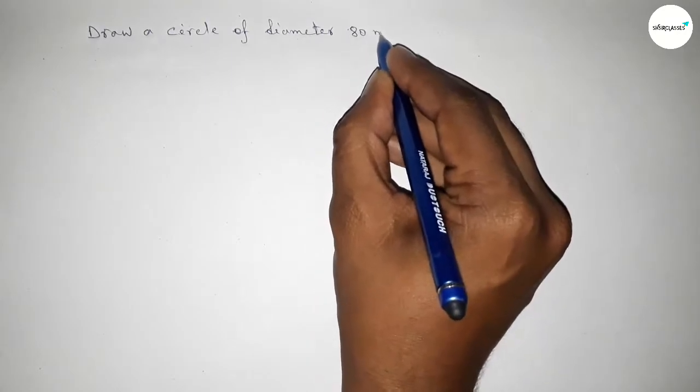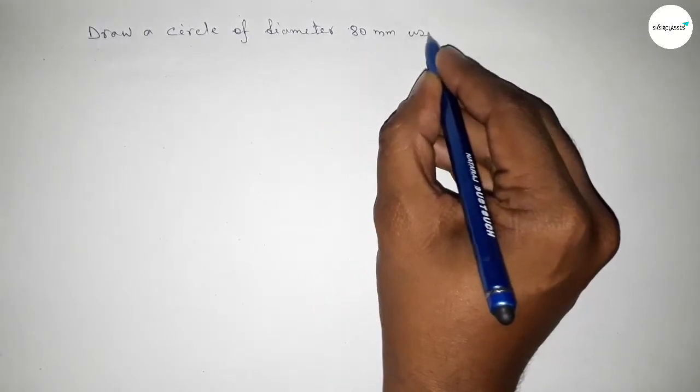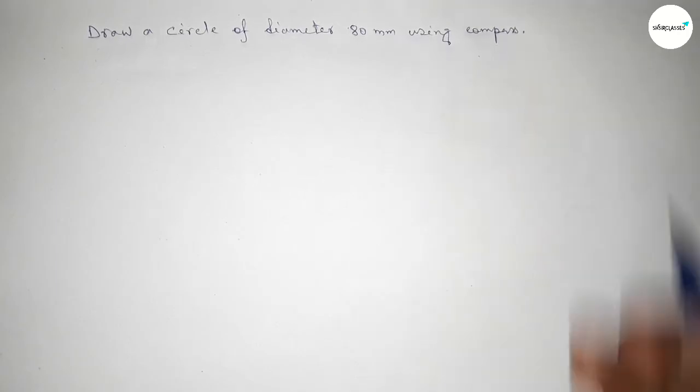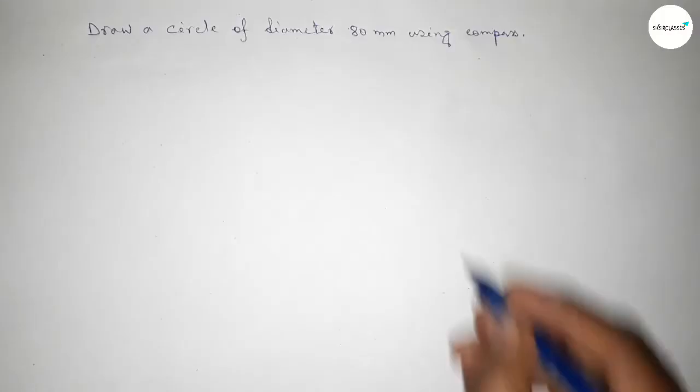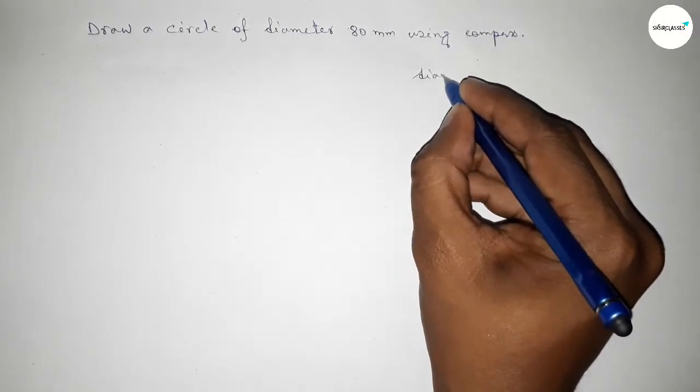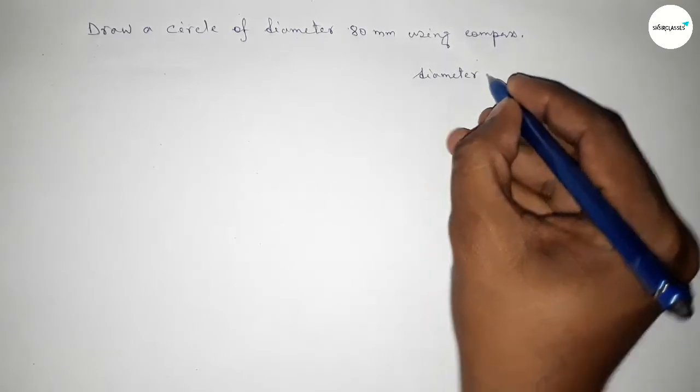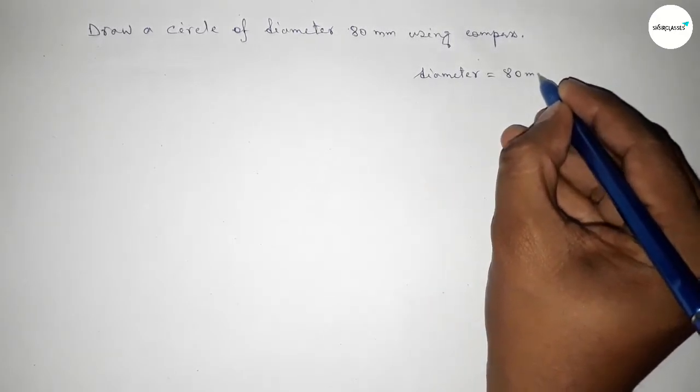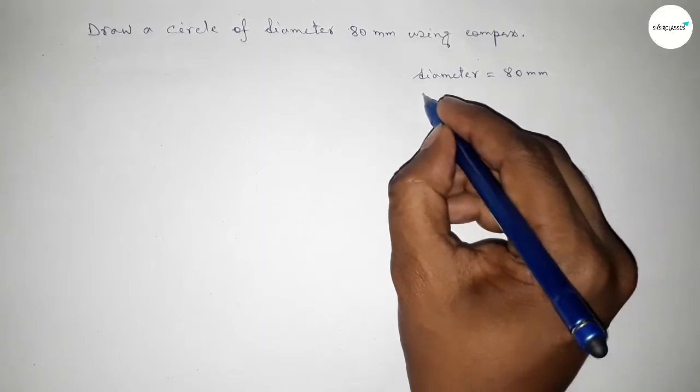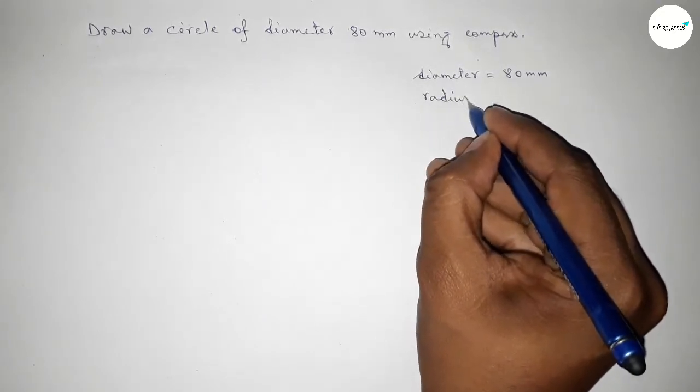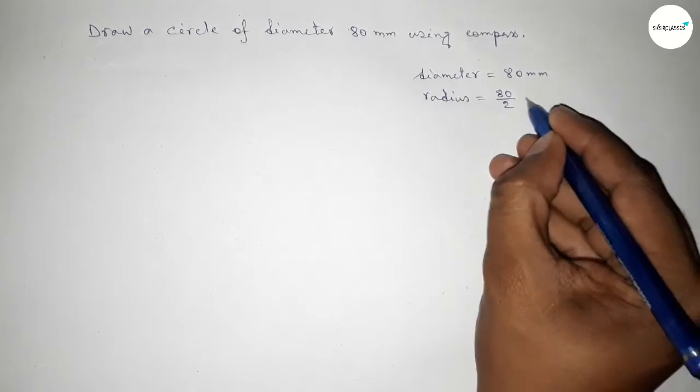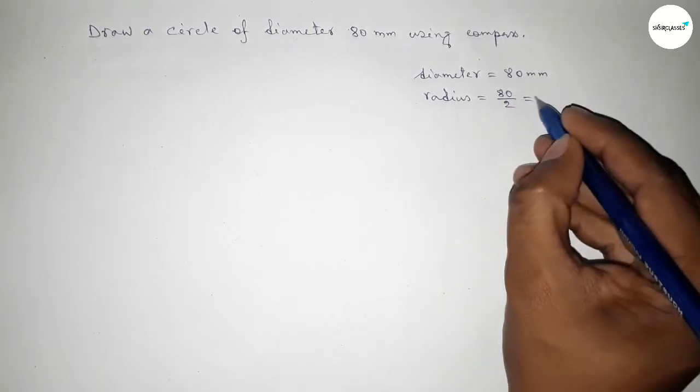First of all, talking about diameter. Diameter equals 80 millimeters. Now finding the radius, so radius equals 80 divided by 2. If you divide by 2, this is 40 millimeters.